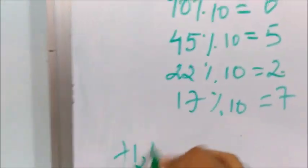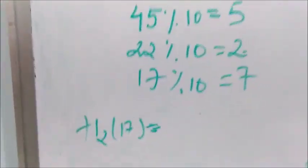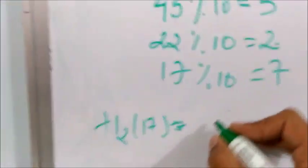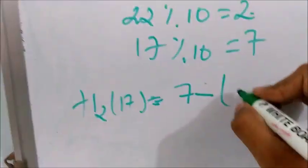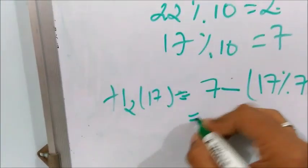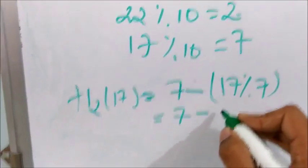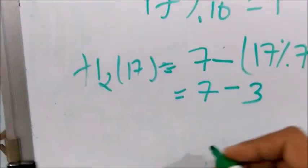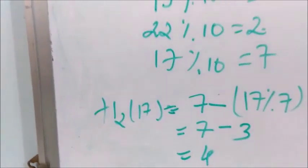It will be h2(17) equal to M. The prime number which is less than 10 is 7. So 7 minus (key is 17 mod 7), it comes out to be 7 minus 3, which equals 4.